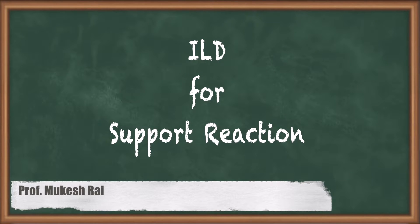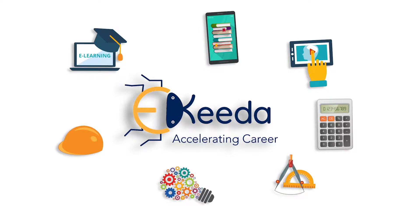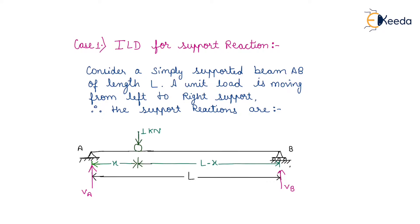Hello students, today we are going to study the Influence Line Diagram for Support Reaction. For finding the Influence Line Diagram for Support Reaction, we need to consider a simply supported beam AB of length L, which is shown here. A unit load is moving from left to right, which is shown here — that is a 1 kN load.